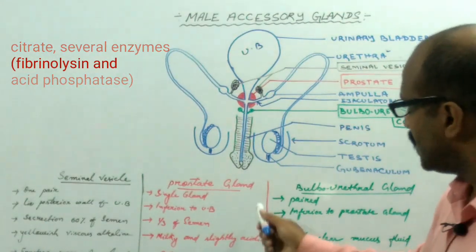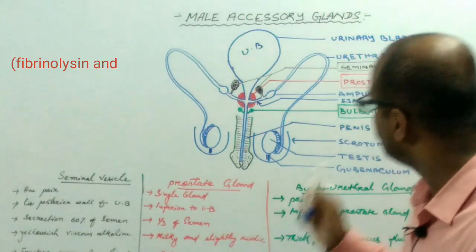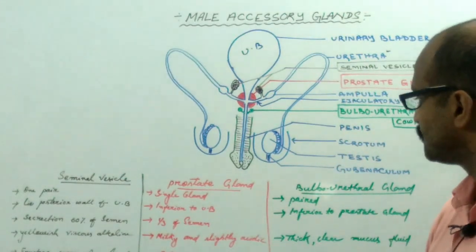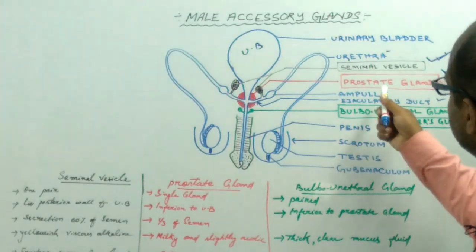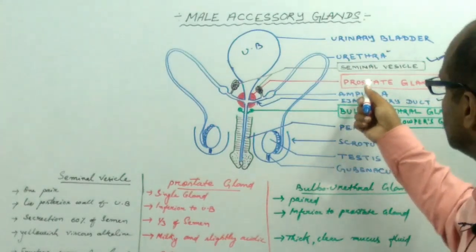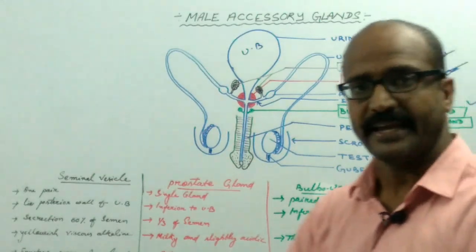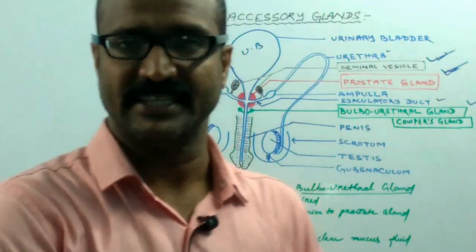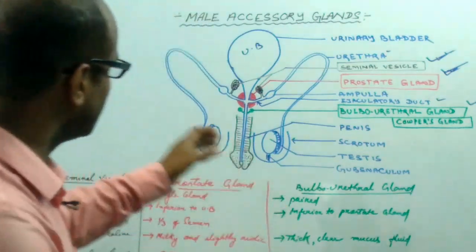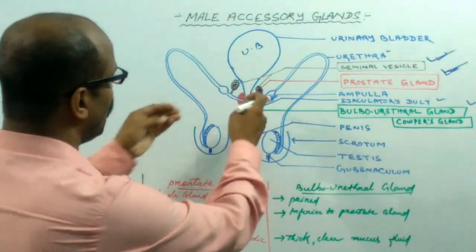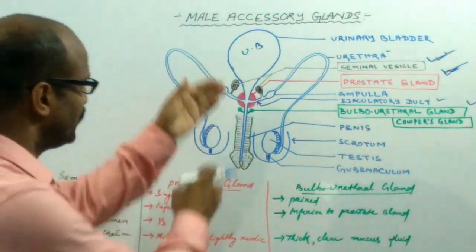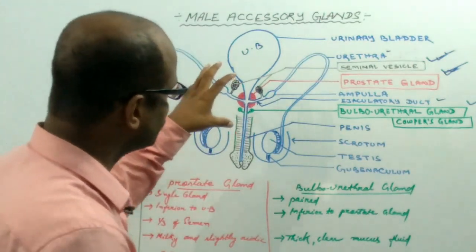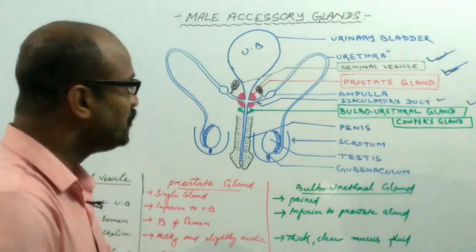The secretion of the prostate gland activates the sperm. In older ages, the prostate gland may enlarge, and the enlargement of the prostate gland in older ages causes constriction of the urethra, which causes painful urination.